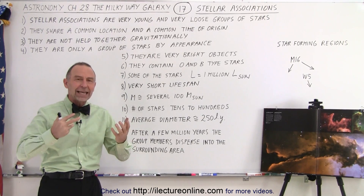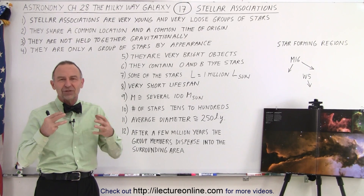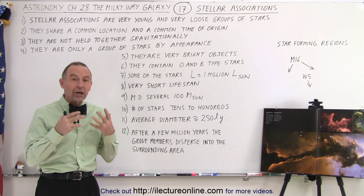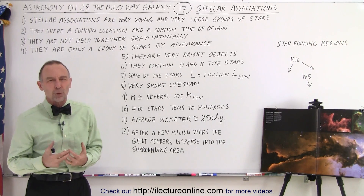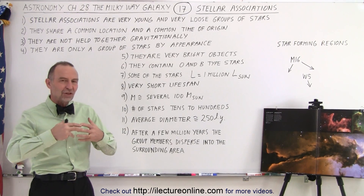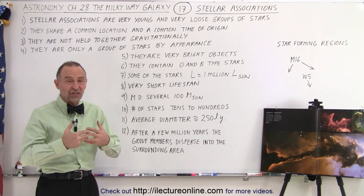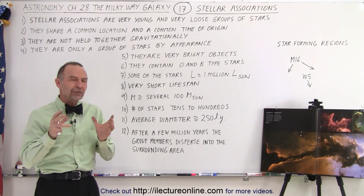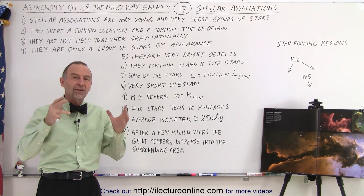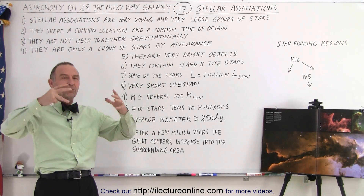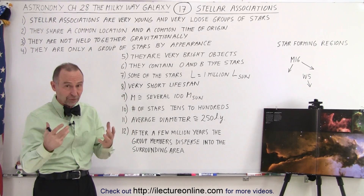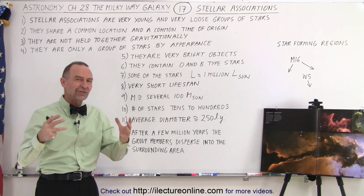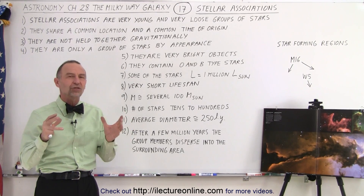As the name indicates, they use the word association because they're not really tied together gravitationally. They only share a common time and place of origin. So when we have these star-forming regions, such as inside the Orion Nebula or inside M16 or in W5, what you'll find is that there's stars being formed at the same time. And those are what we call stellar associations.